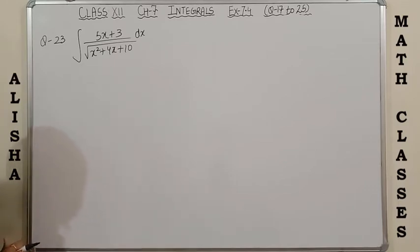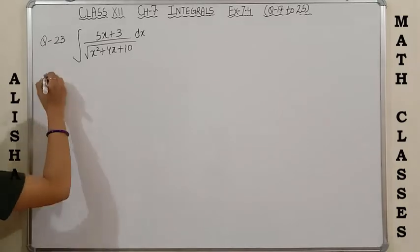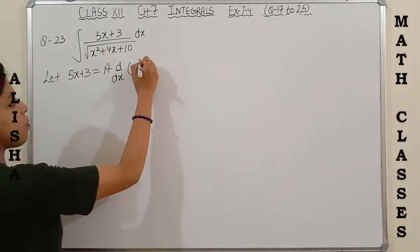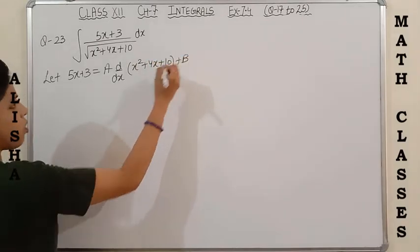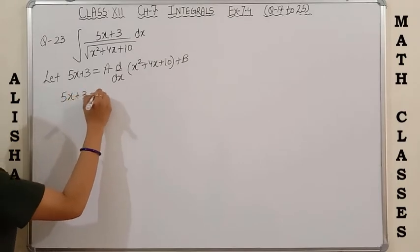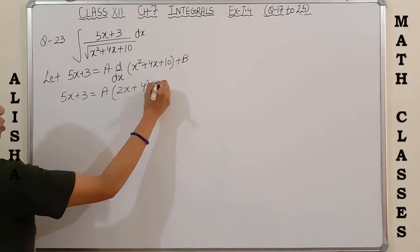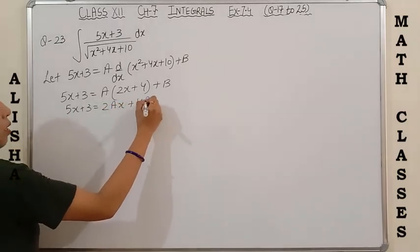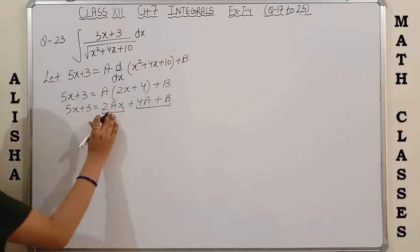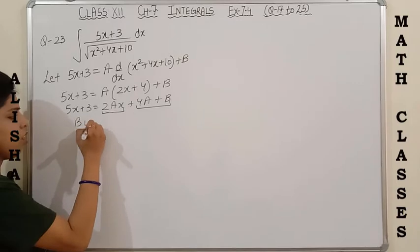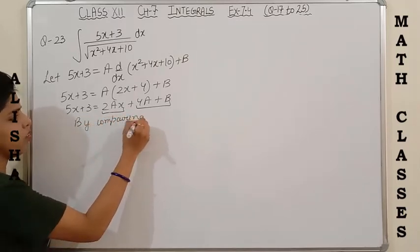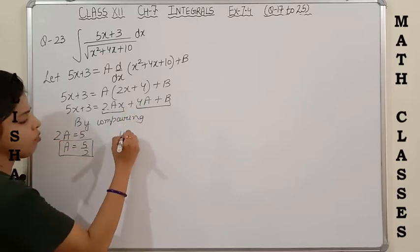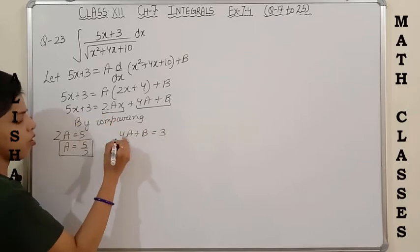Next, question 23: integration of (5x+3) upon √(x²+4x+10). Let 5x+3 = A times the derivative of x²+4x+10, plus B. So 5x+3 = A(2x+4) + B. Opening: 2Ax + 4A + B. Comparing coefficients of x: 2A = 5, so A = 5/2. Comparing constant terms: 4A + B = 3.